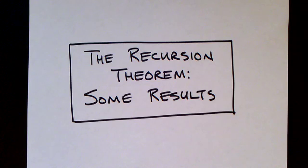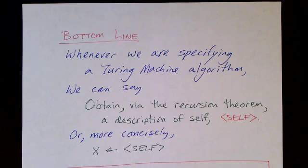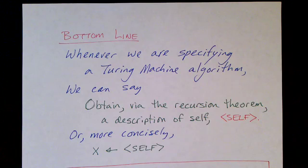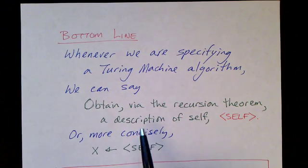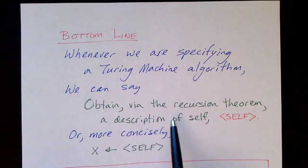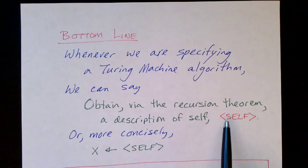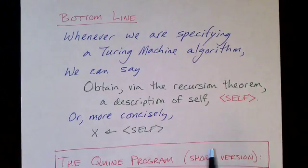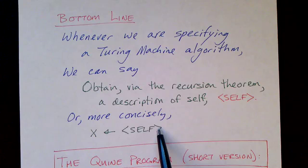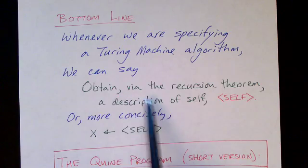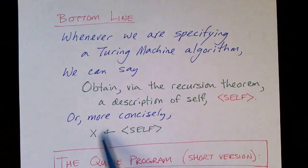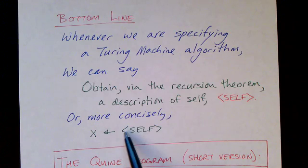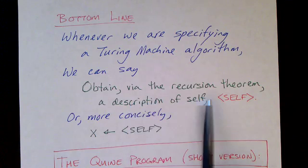In this video we're going to apply the recursion theorem and see what we can do with it. Here is the bottom line: whenever we're specifying a Turing machine algorithm, it's okay to say obtain via the recursion theorem a description of this program itself, which we can denote as bracket-self-bracket, or write as X gets a description of self. This is a legal statement to say in any algorithm — obtain a description of yourself and do something with it, such as store it in the variable X. This is a legal thing to say in any program, and that is the result of the recursion theorem.